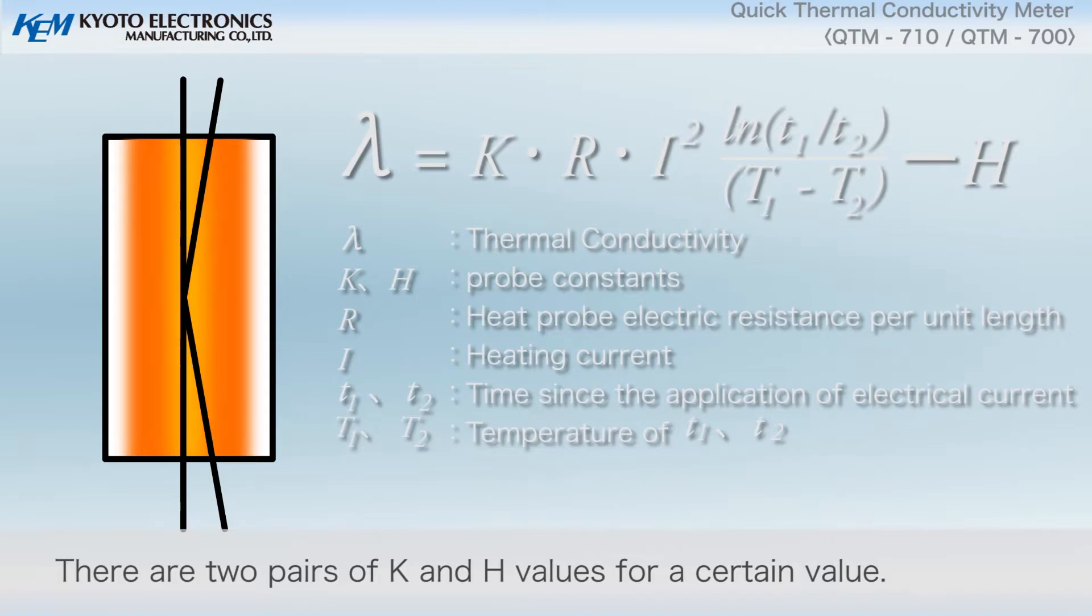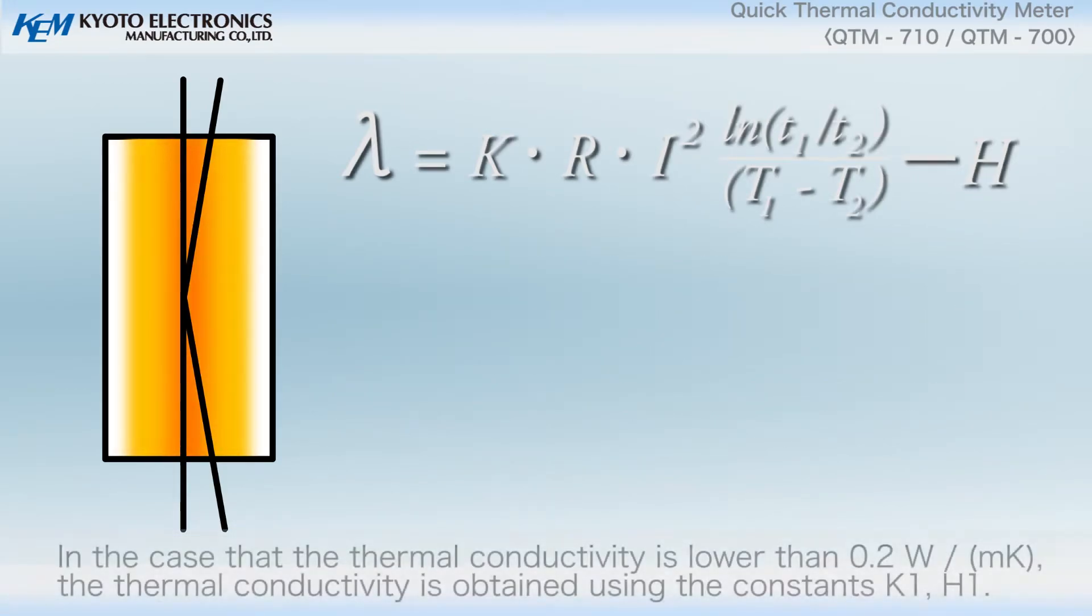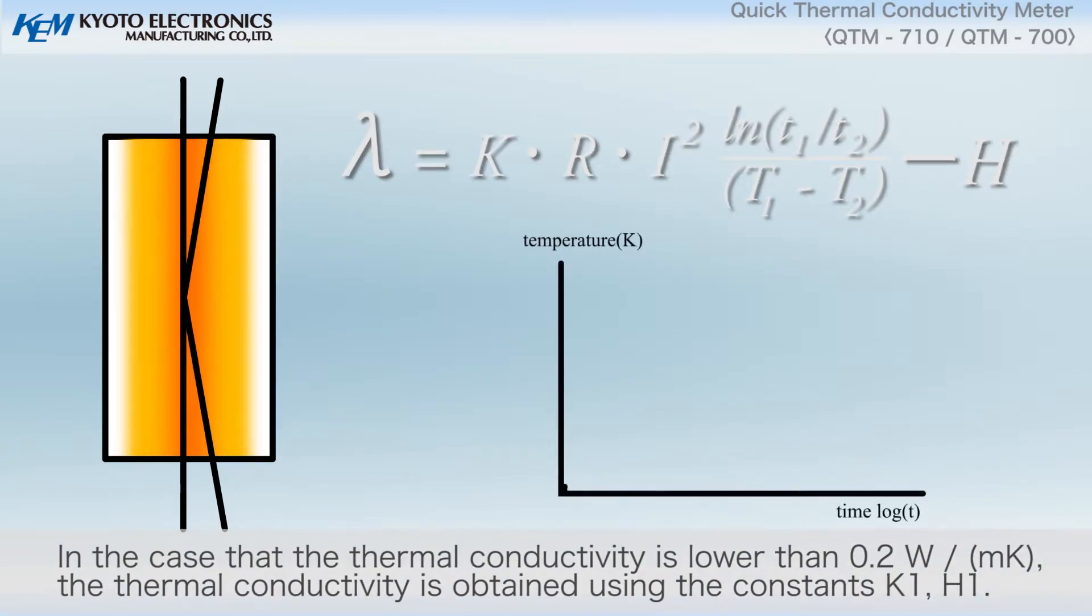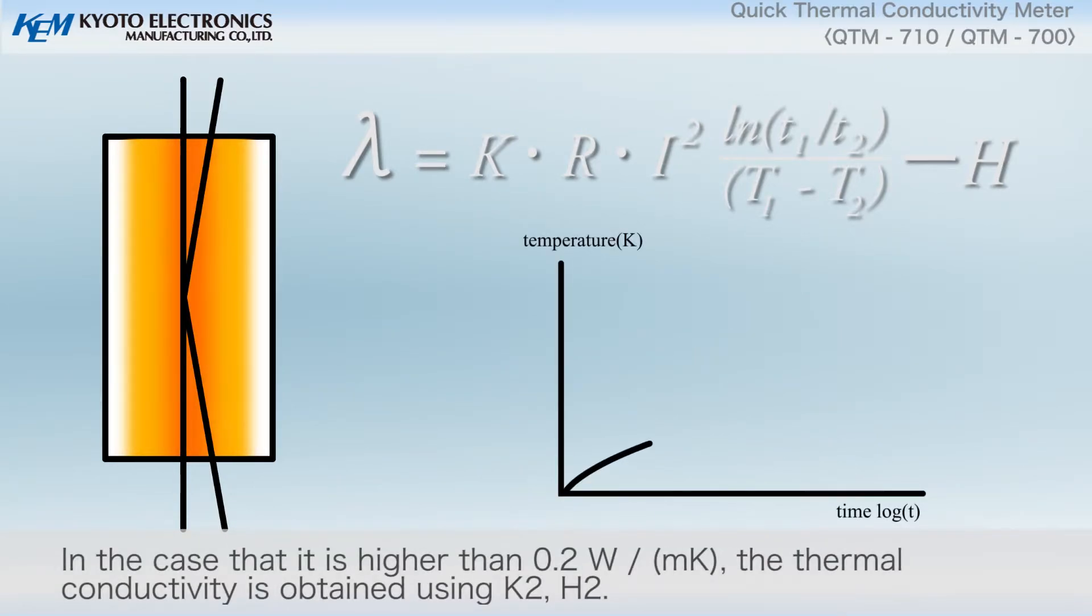There are two pairs of K and H values for a certain value. In the case that the thermal conductivity is lower than 0.2 watts per meter Kelvin, the thermal conductivity is obtained using the constants K1H1. In the case that it is higher than 0.2 watts per meter Kelvin, the thermal conductivity is obtained using K2H2.